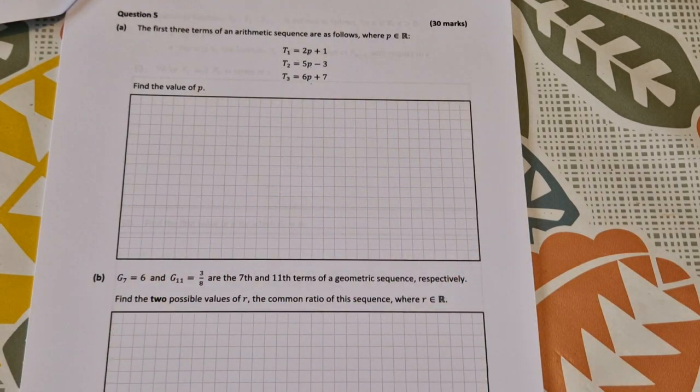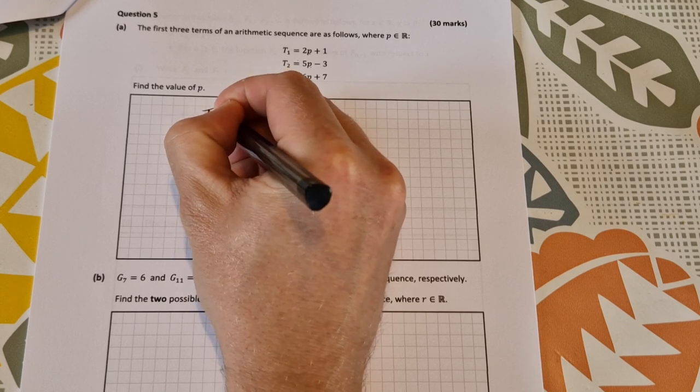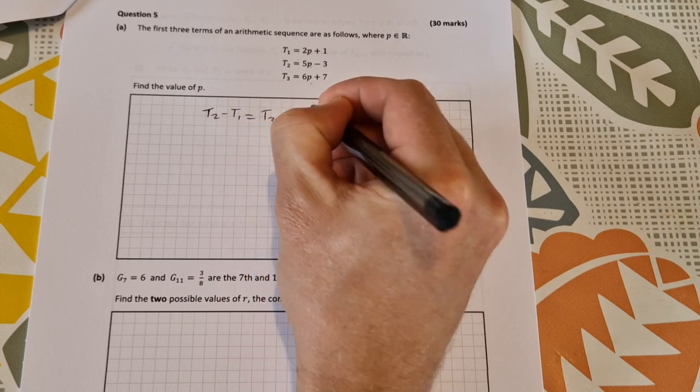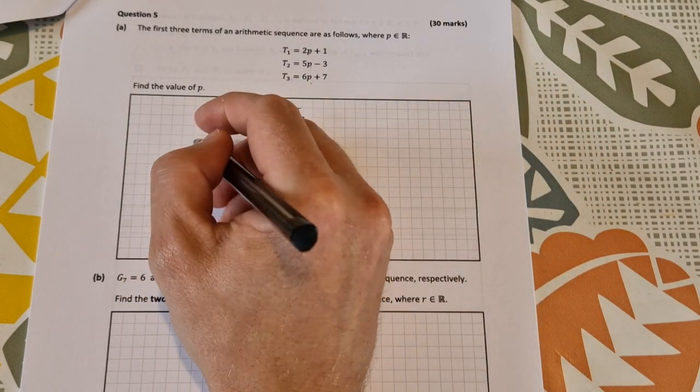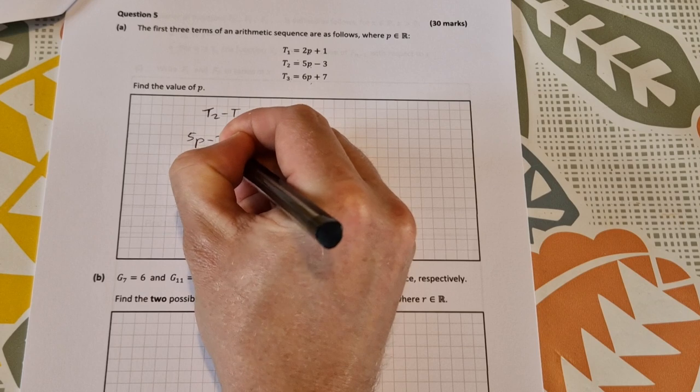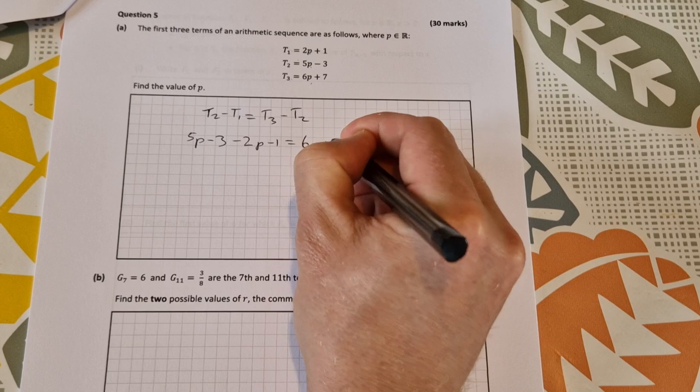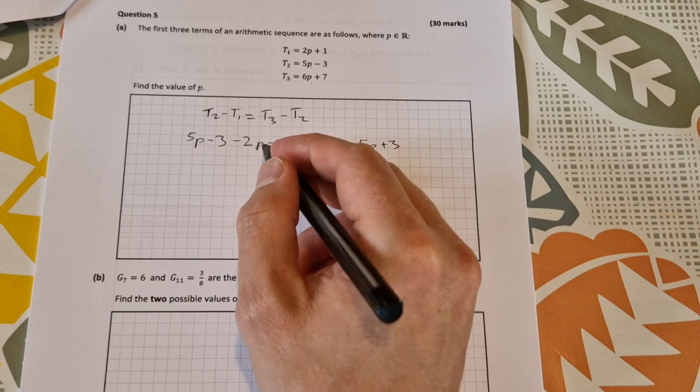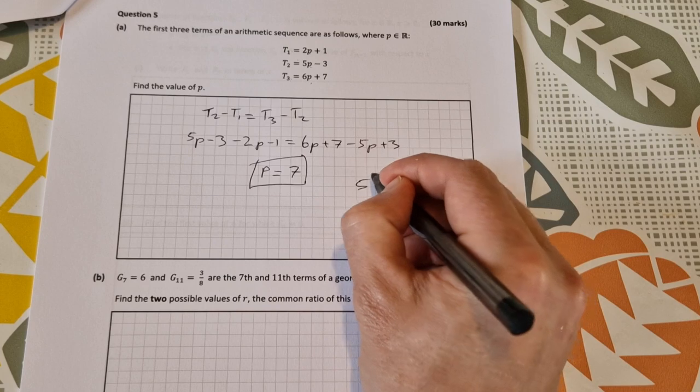If it's an arithmetic sequence that means that the common difference is equal, so we can say t2 minus t1 is equal to t3 minus t2. Just sub them all in there: 5p minus 3 minus 2p minus 1 is equal to 6p plus 7 minus 5p plus 3. Work it all out, p to one side numbers to the other, p is equal to 7. That's worth a nice five marks to start you off.